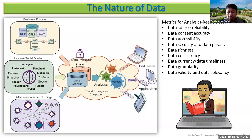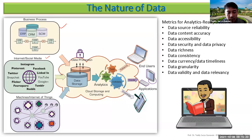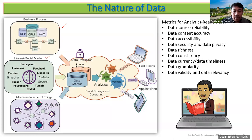The nature of data can come from business processes — ERP, CRM, SCM, and so on — or from the internet and social media, where you can do data mining. You can scrape Instagram, Facebook, LinkedIn, Tumblr, Reddit, and so on. It can also come from machines or the Internet of Things.